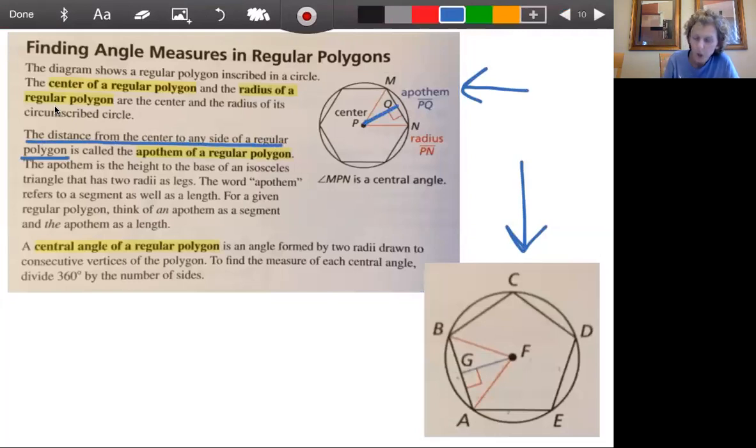Because you notice when we drop down the height in an isosceles triangle, which is what this is, it creates a 90 degree angle right there. Do you see it? And therefore that's a right triangle. And so we'll be able to use some trig to find angle measures and to find the length of that apothem.